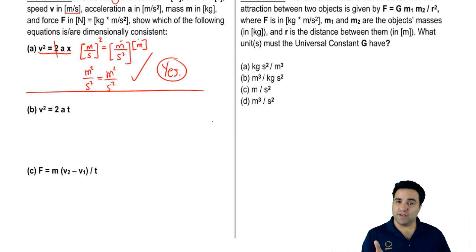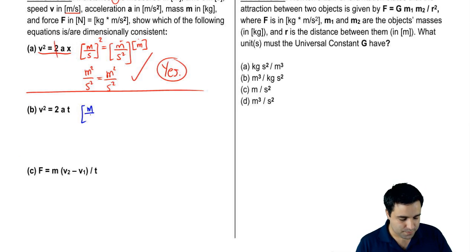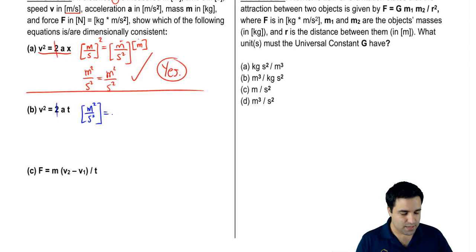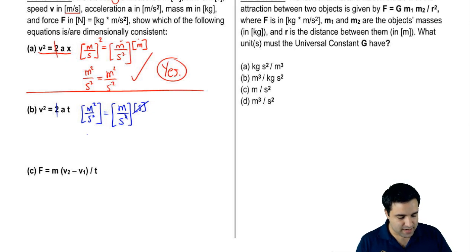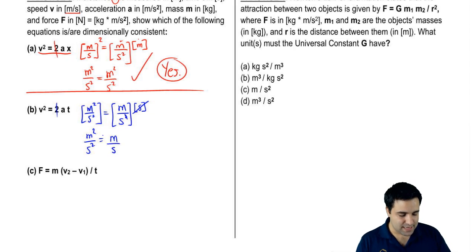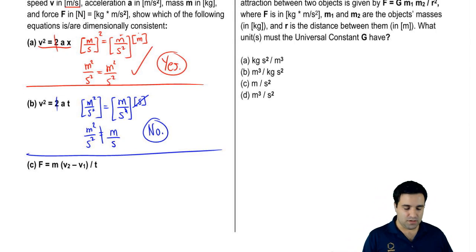Let's do part B. Meters per second — I'll put both terms squared already since they're both getting squared. The two goes away. Acceleration is meters per second squared, and then times time, which is seconds — so one of those seconds cancels. I have meters squared over seconds squared on the left, but only meters over seconds on the right. This is not the same, so this equation is not dimensionally consistent — the units on the two sides differ.